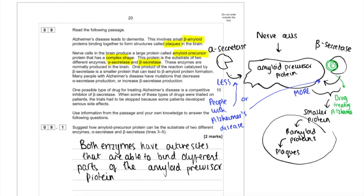These enzymes are normally produced in the brain. One product of the reaction catalyzed by beta secretase is a smaller protein that can lead to beta amyloid protein formation. Many people with Alzheimer's disease have mutations that decrease alpha secretase production and increase beta secretase production.